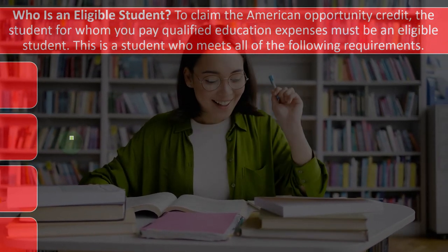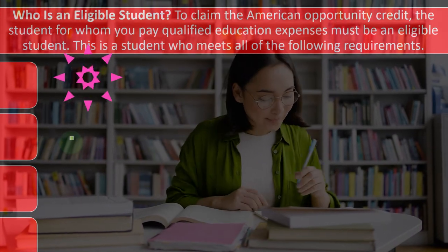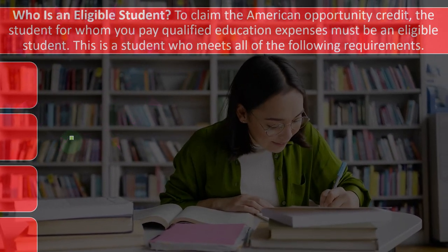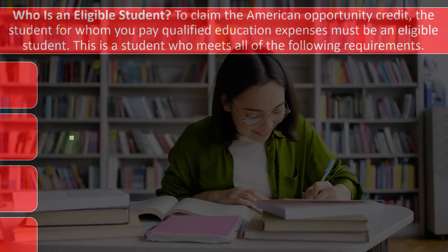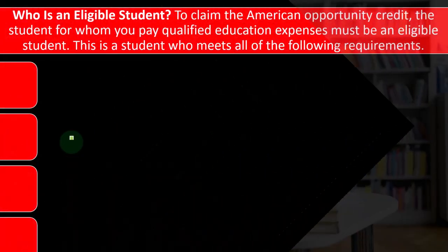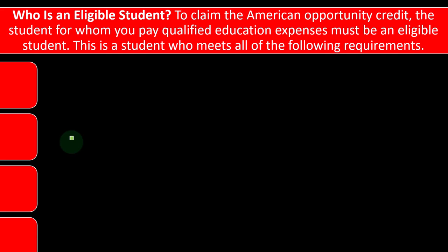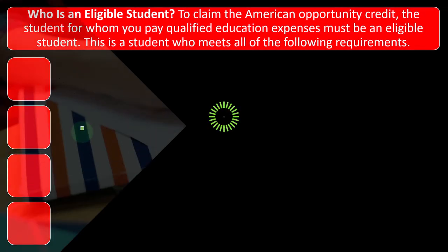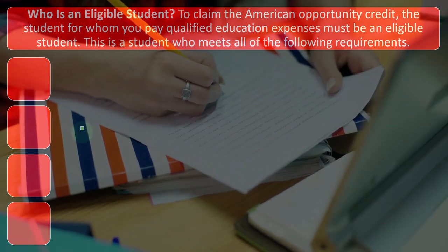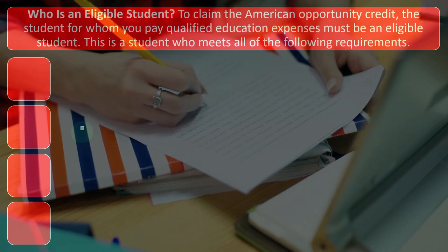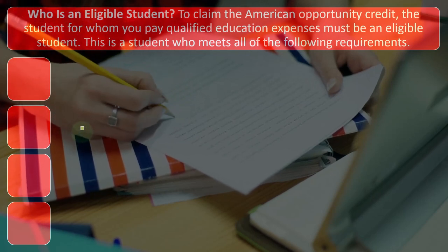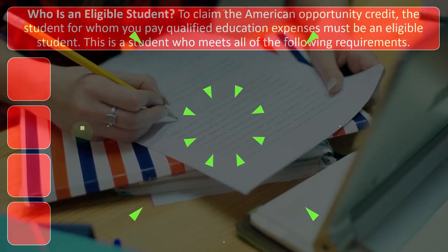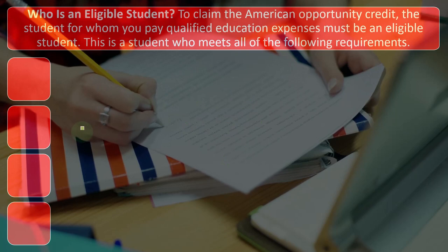Who is an eligible student to claim the American Opportunity Credit? The student for whom you pay qualified education expenses must be an eligible student who meets all the following conditions. Note we're talking specifically about the American Opportunity Credit, which usually offers a bigger benefit but is more restrictive than the Lifetime Learning Credit. If you don't qualify for the American Opportunity Credit, you can default and see if you still qualify for the Lifetime Learning Credit, which we'll discuss in future presentations.